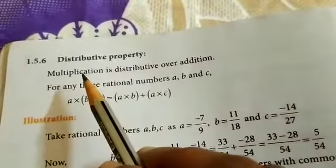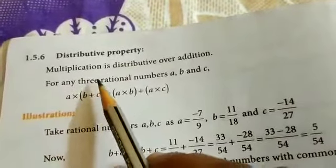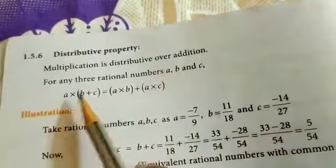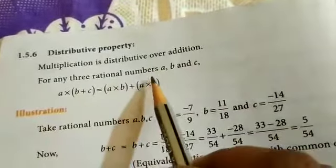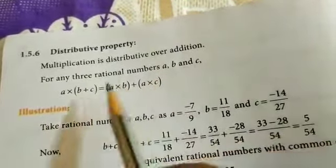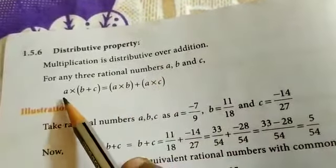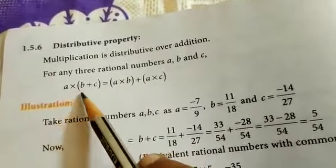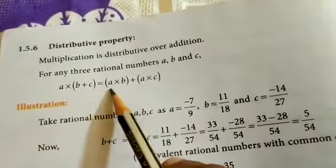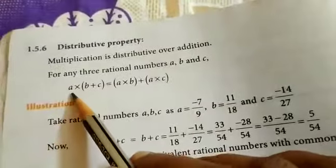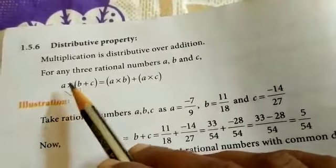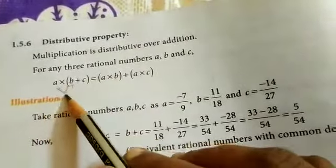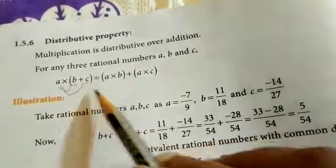Next two topics are distributive properties. Multiplication is distributive over addition. For any three rational numbers A, B, and C: A into B plus C equals A into B plus A into C.